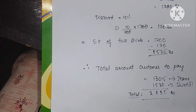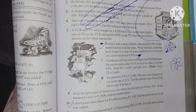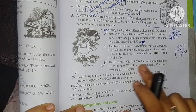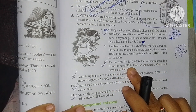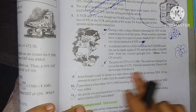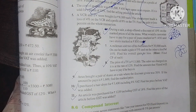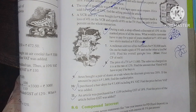Now the second question: the price of a TV is rupees 13000 and the sales tax charged on it is at the rate of 12%. Find the amount that Vinod will have to pay if he buys it, meaning the total including the sales tax of 12% on the original amount of 13000.